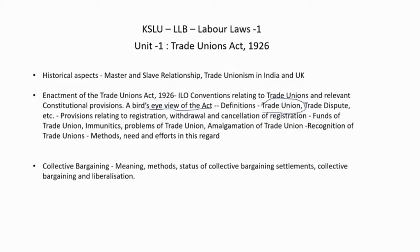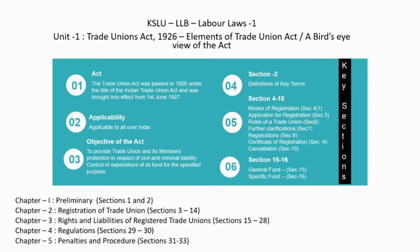Here is a bird's eye view of the act. This act was passed in 1926 under the title the Indian Trade Union Act and was brought into effect from 1st June 1927. This act is applicable all over India — there is no exception for any states. The key objectives of the act are: one, to provide trade unions and their members protection in respect of civil and criminal liability; and two, to control the expenditure of funds for specified purposes.